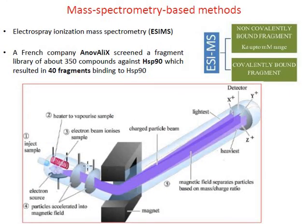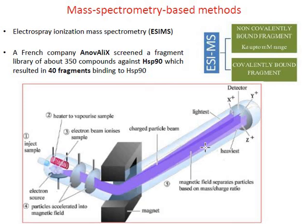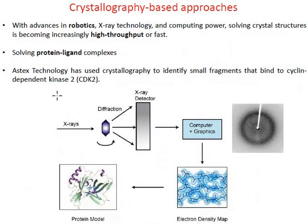Mass spectrometry methods can also be used for identifying fragments. In electrospray ionization mass spectrometry, the sample is injected, an electron beam ionizes the sample, and the sample is accelerated through a magnetic field. The sample is further divided into particles, which are identified by their mass-to-charge ratio. It is possible to identify covalently bound fragments, for example in proteins like cysteine proteases, as well as some non-covalently bound fragments.